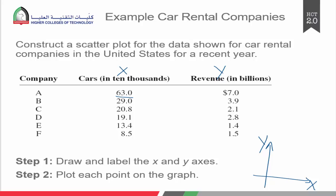This input, 63 times 10,000, represents 630,000 cars, which will bring forth 7 billion in revenue. Similarly, this input of 290,000 cars will bring forth a revenue of 3.9 billion.